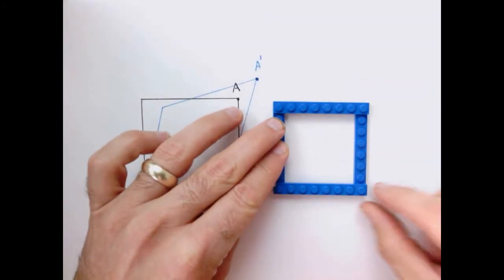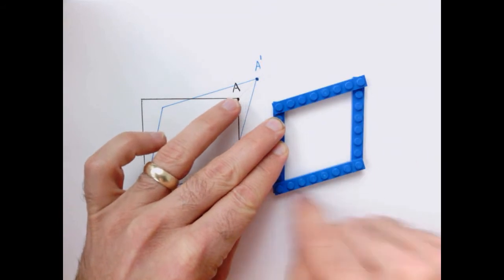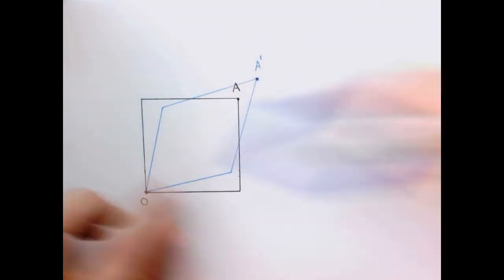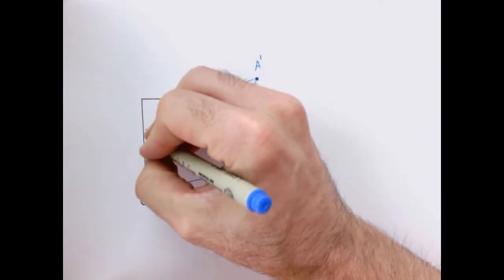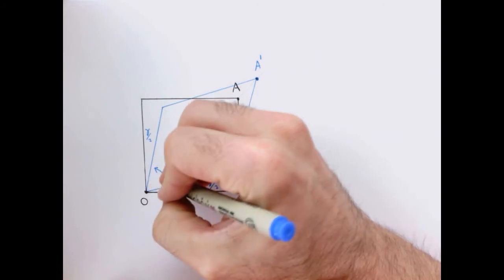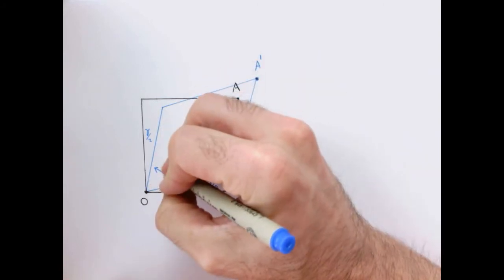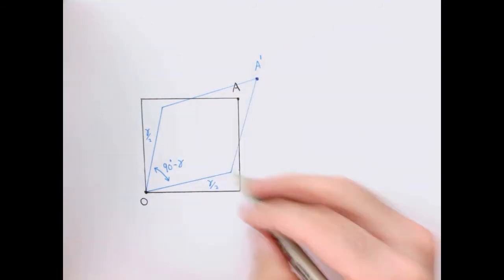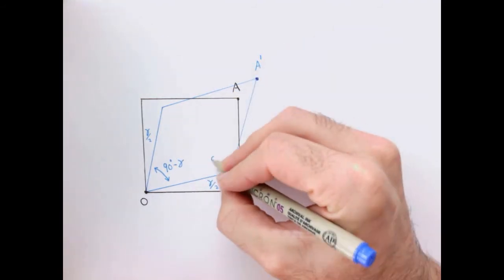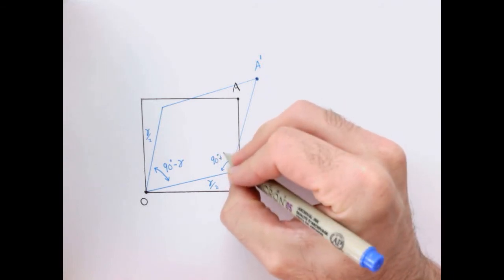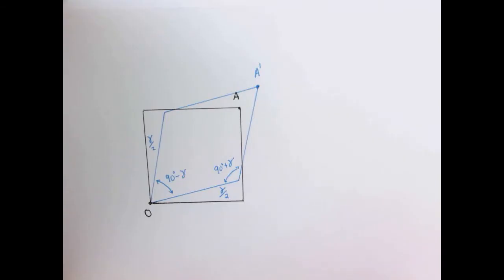From our model, the definition of the shear angle is the angle that this thing tilts over. You can see that in this configuration, this is half the shear angle, and this is the other half. Meaning that this angle here, between these two lines, is 90 degrees minus the shear angle. Likewise, that means that the angle here is 90 degrees plus the shear angle.